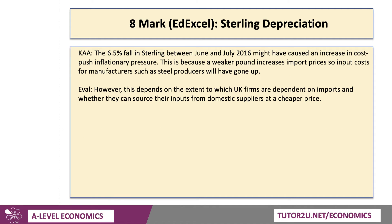Here's an answer I just typed up for you. It's not perfect, but I think it does the job. First KAA point: the 6.5% fall in sterling — there's the application — might have caused an increase in cost-push inflationary pressure. This is because a weaker pound increases import prices, so input costs for manufacturers such as steel producers will have gone up.